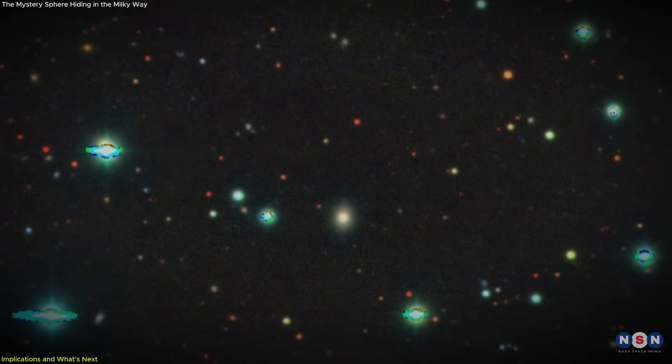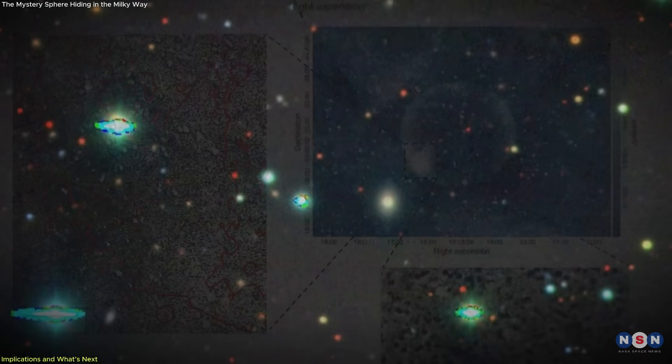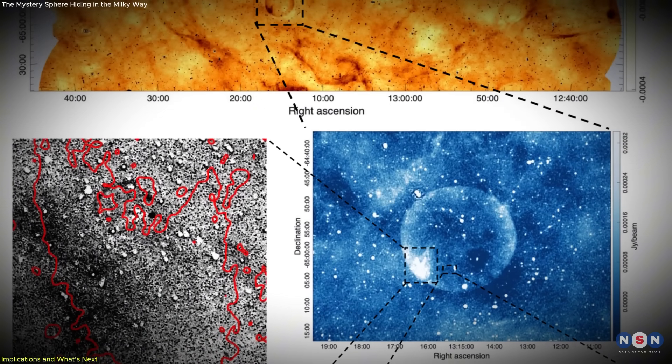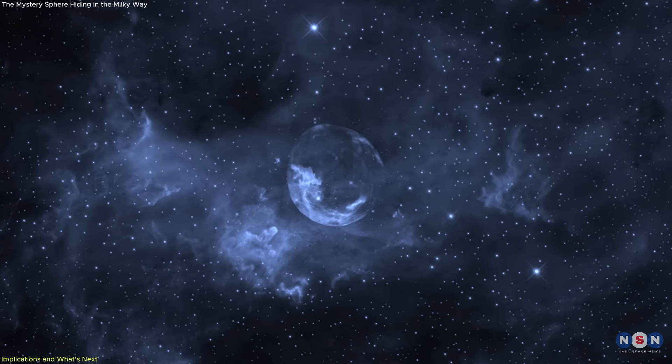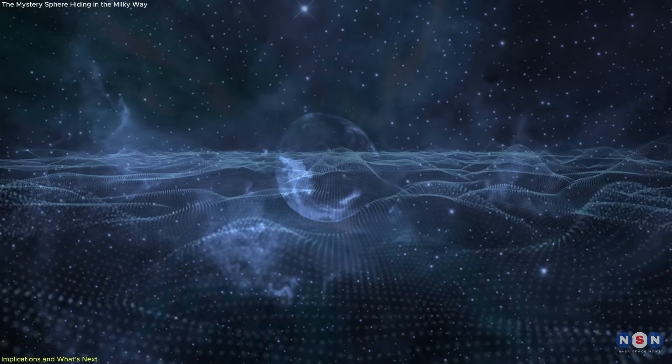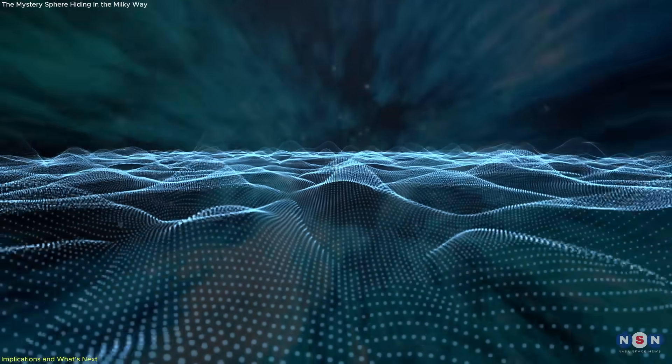Until now, most supernova searches have relied on visible light or X-rays, unintentionally filtering out structures like this one. If more objects like Teleos exist, they've likely gone unnoticed in plain sight, detectable only in deep, low-frequency radio surveys.